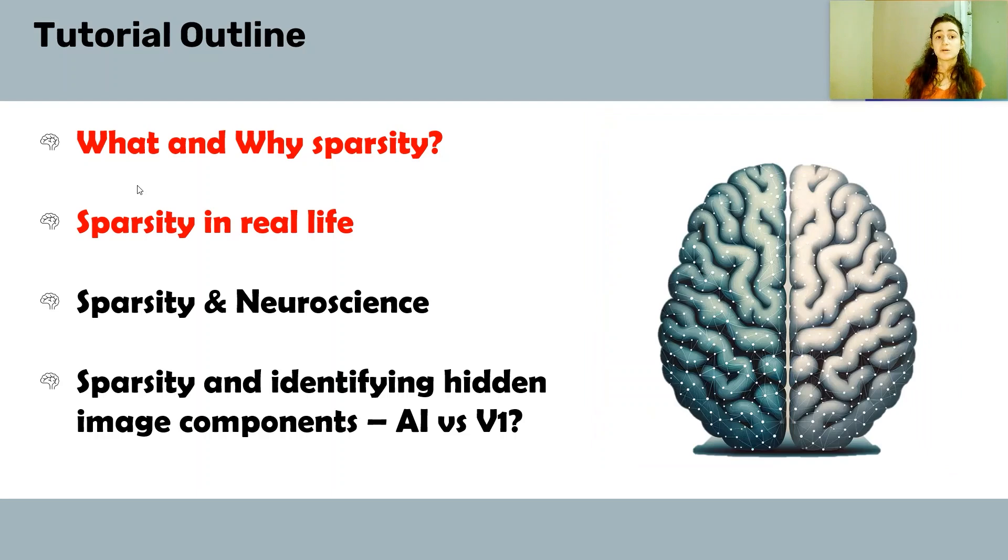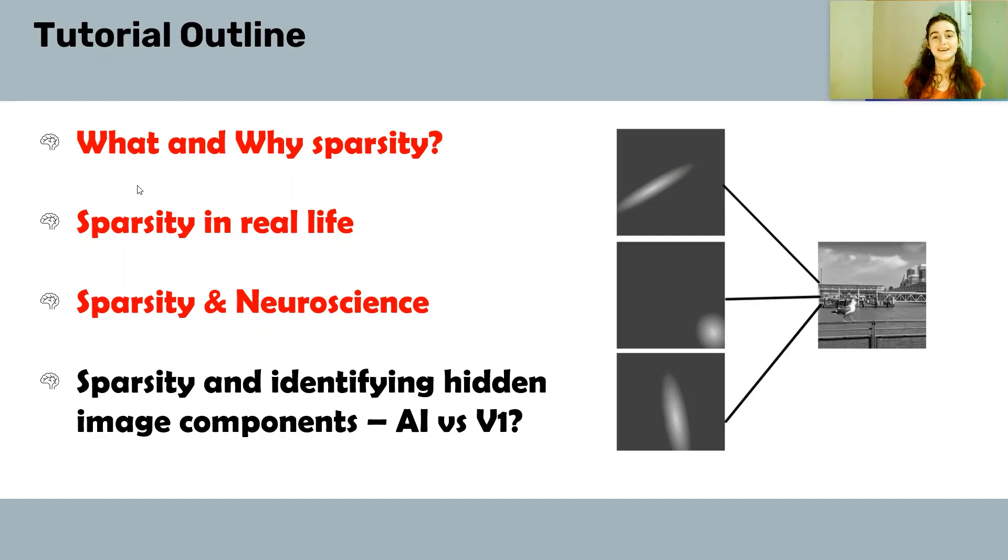We will focus on sparsity and neuroscience—how sparsity is related to neuroscience. Lastly, we will talk about how applying sparsity can be helpful to discover the hidden latent components of images or signals, and how it is related to processing in the brain, particularly in V1, the primary visual cortex.